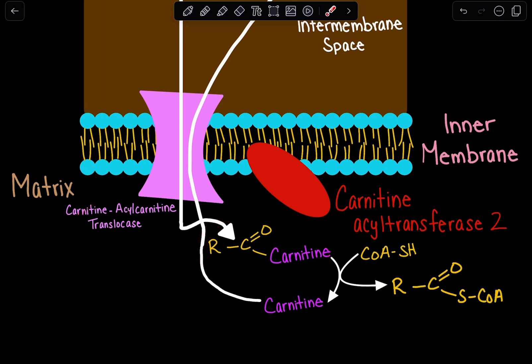Now we have to remove that carnitine because we want to reattach that coenzyme A group so we can oxidize our fatty acid for energy through beta-oxidation.